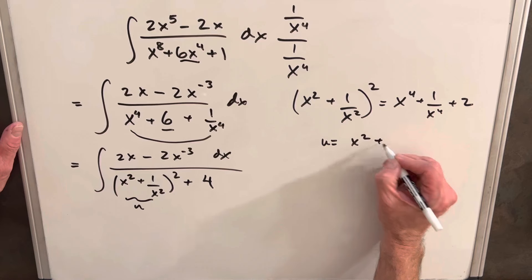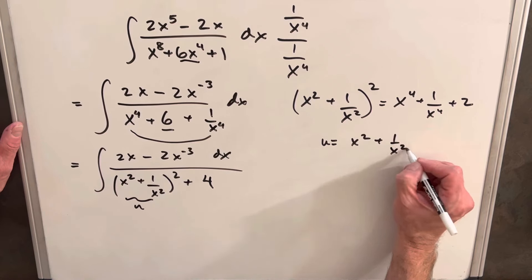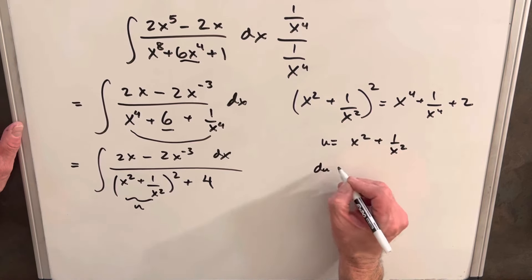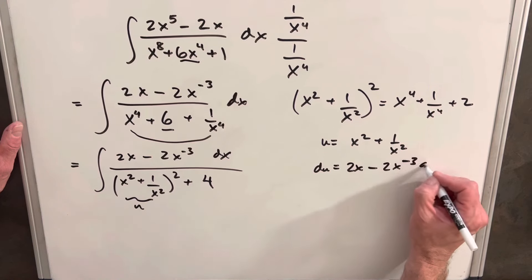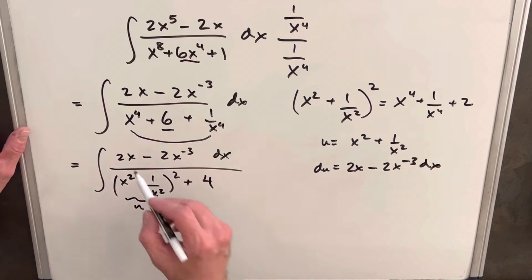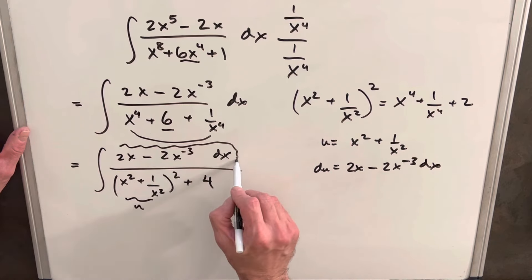So if I do that, u being x squared plus 1 over x squared, then du is just 2x minus 2x minus 3 dx. And that's exactly what we have right here. Lucky coincidence.